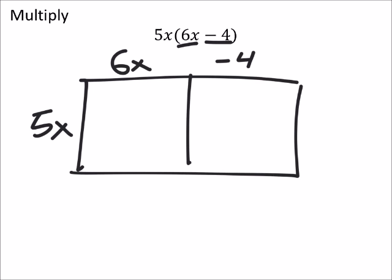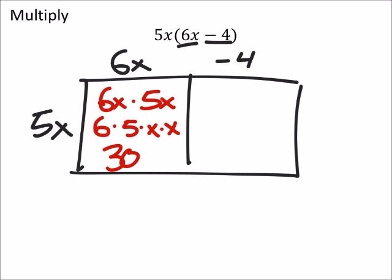If I can find the area of these two smaller rectangles, it would tell me the area of the full rectangle. For the area of this one, I would have 6x times 5x. You could use the commutative property of multiplication to move these around: 6 times 5 times x times x, which would give you 30x². That's our first term, 30x².